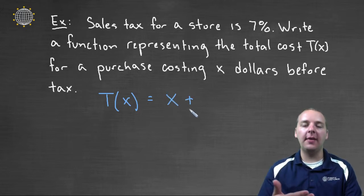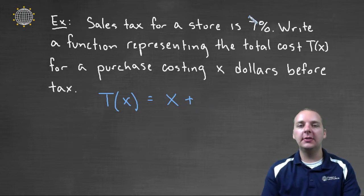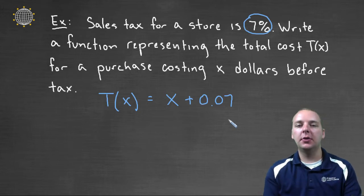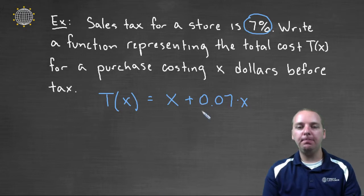Now what is the sales tax on shirts and pants that cost a total of X dollars? Well the sales tax was seven percent. So we're going to put 0.07 of the purchase price, so times X. Not just 0.07, but seven percent of the total cost of the shirt and the pants and whatnot. So this part here will be the tax.